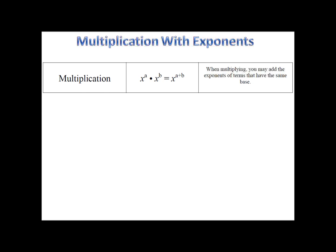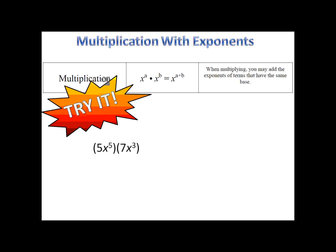Now, here's one for you to try. 5x to the fifth times 7x to the third. Please pause the video here. Let's see how you did. 5 times 7 is 35. 5 plus 3, the exponents on the x, is 8. So, 35x to the eighth.